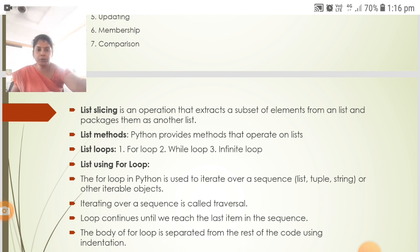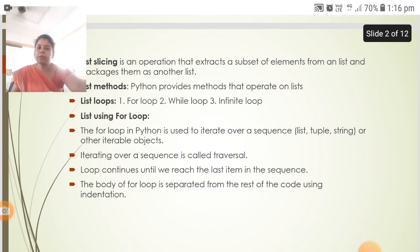The for loop in Python is used to iterate over a sequence, that is list, tuple, string, or other iterable objects. Iterating over a sequence is called traversal.